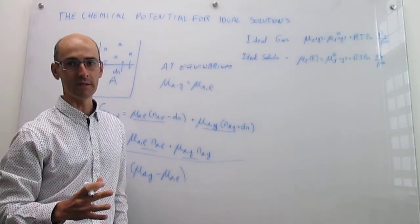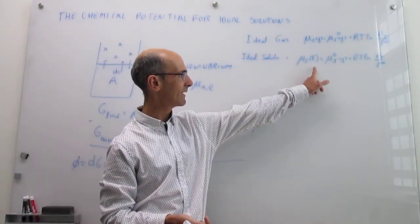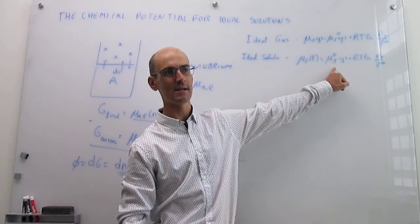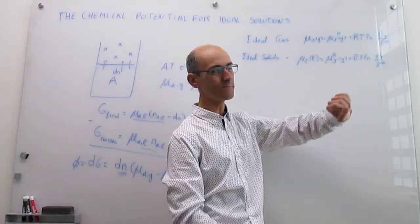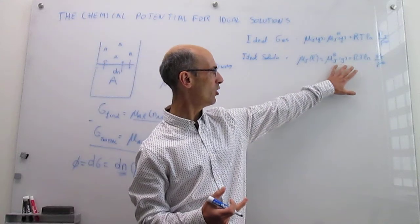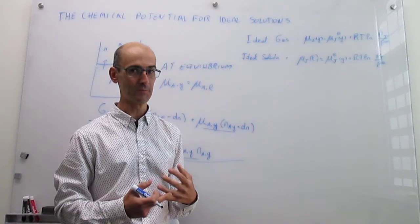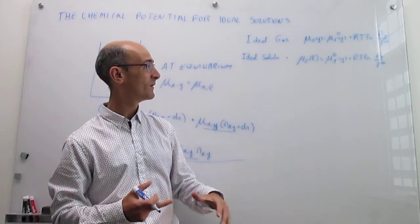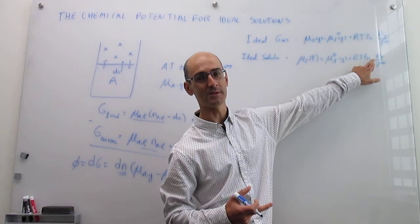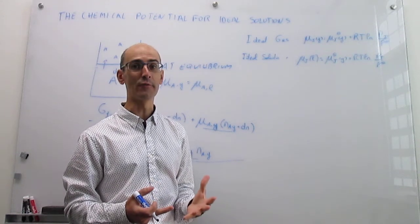This is not the end of it by any means. Notice that this expression is a little awkward: we have the chemical potential of the liquid expressed as a function of properties of the gas — the chemical potential of the gas at standard conditions and the partial pressure of the gas. In the next videos, we will work towards replacing these gas-phase dependencies with properties of the liquid only. In the next video, we will relate partial pressure (a measure of gas concentration) to liquid concentration using the concept of Raoult's Law.